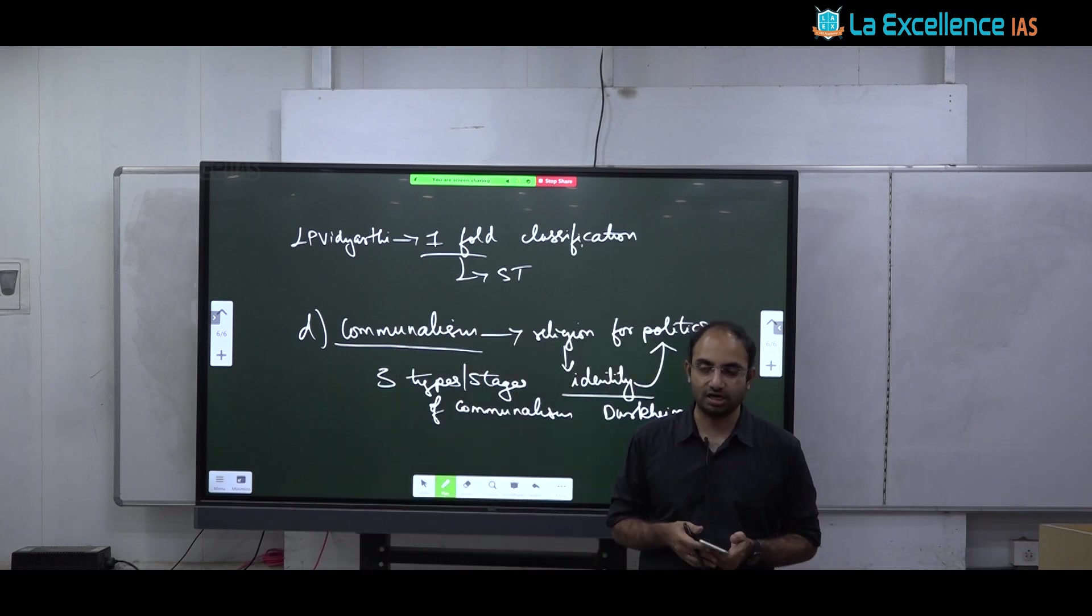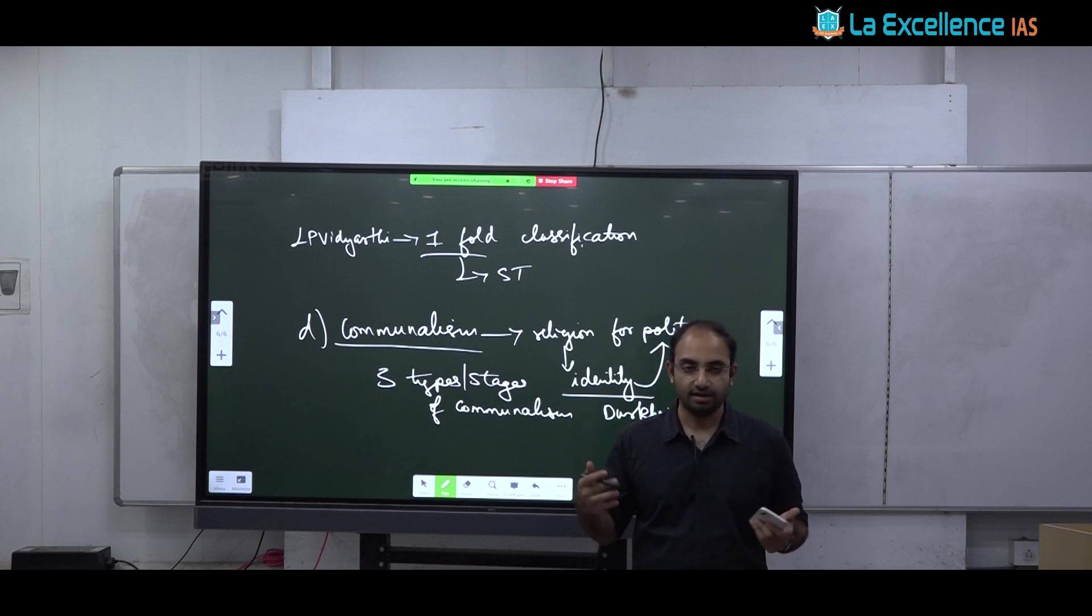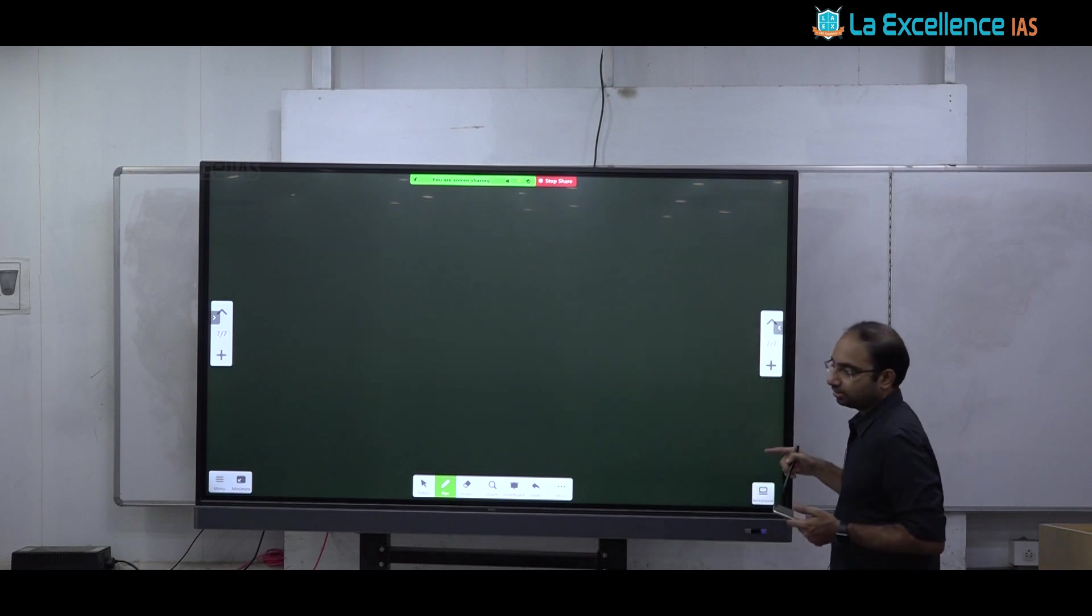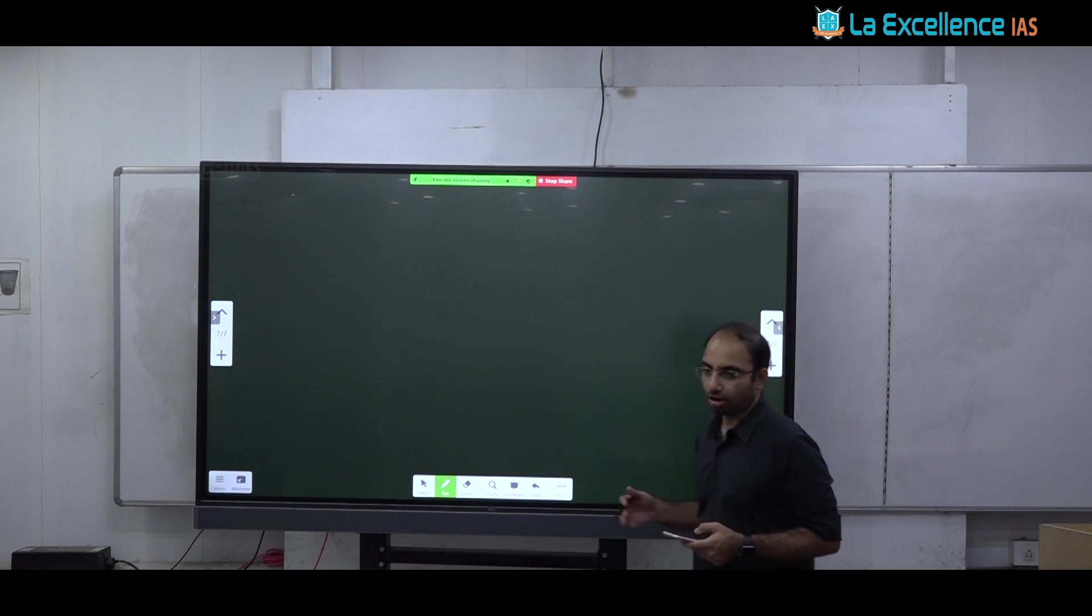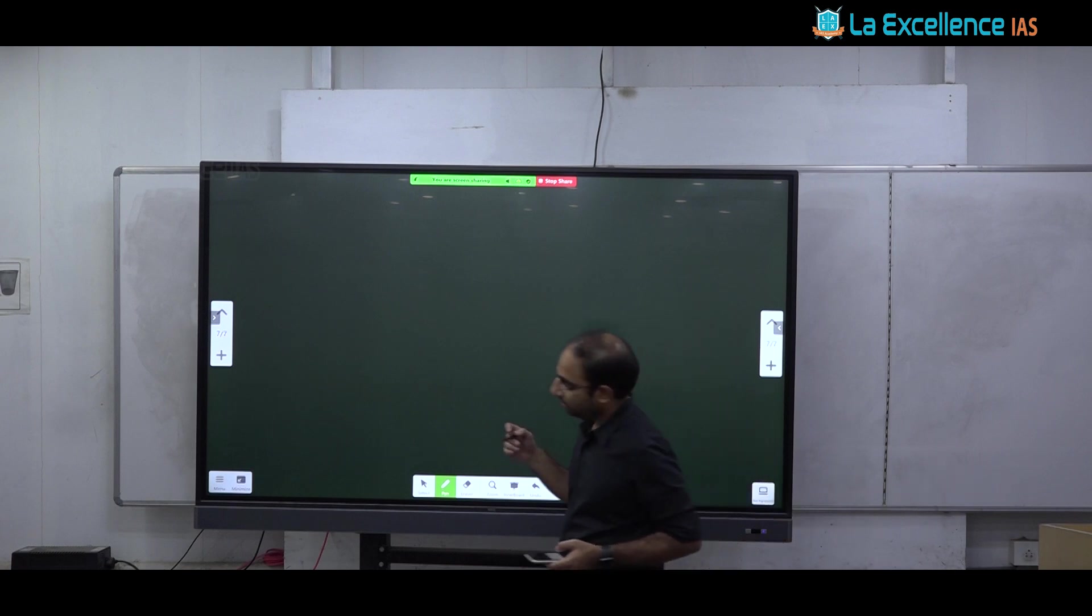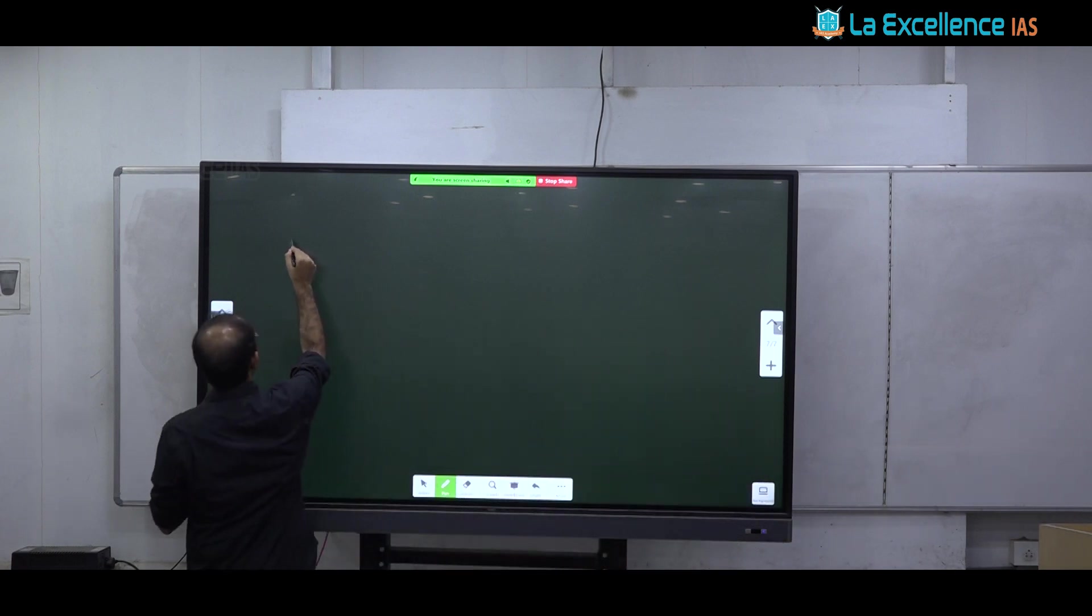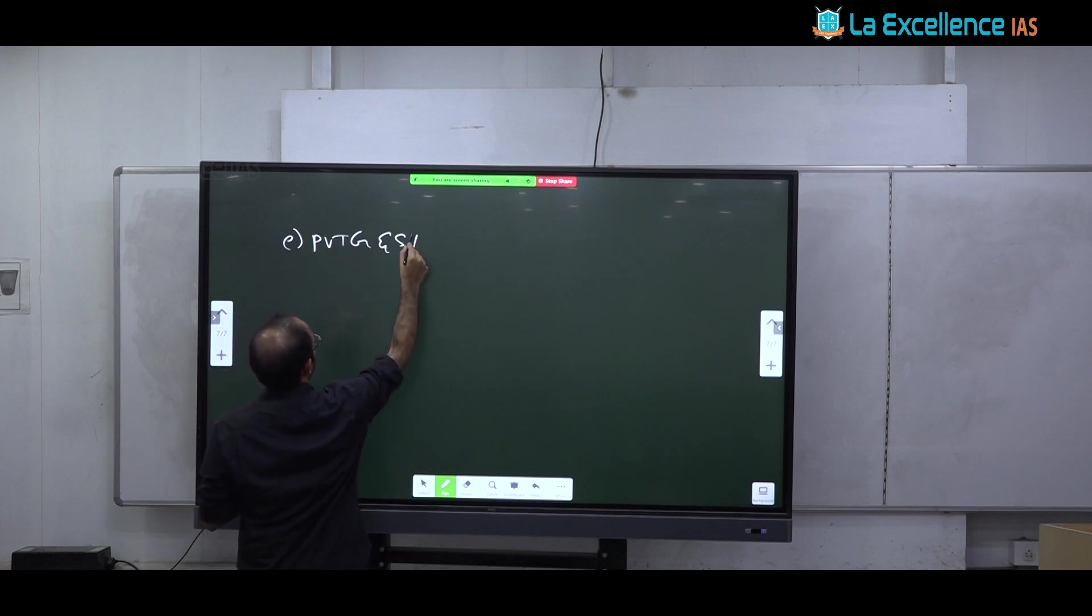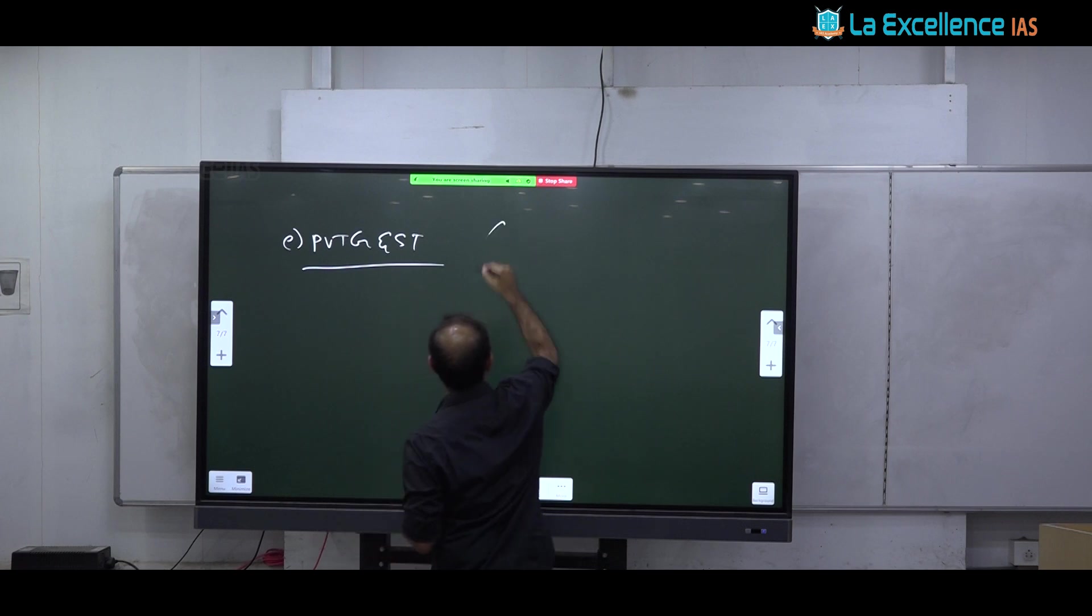And finally you can tell how anthropology can be used to handle communalistic problems in India. So you can use culture relativism as a way to understand differences. And how anthropology can bring about unity of different people and help them meet on a common footing to overcome misunderstandings. Next E, PVTG and ST. Very simple. You could draw a diagram and say ST is not a uniform group.